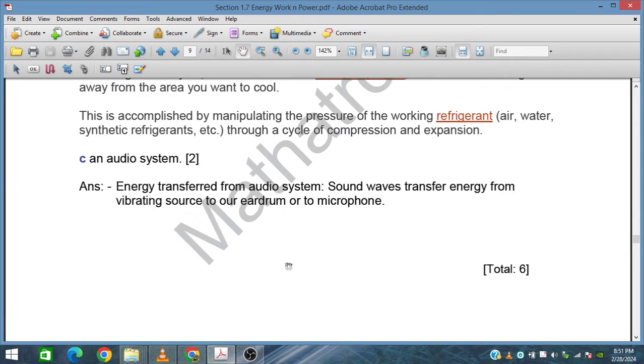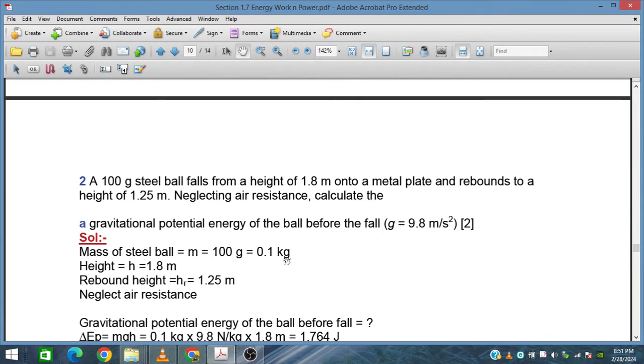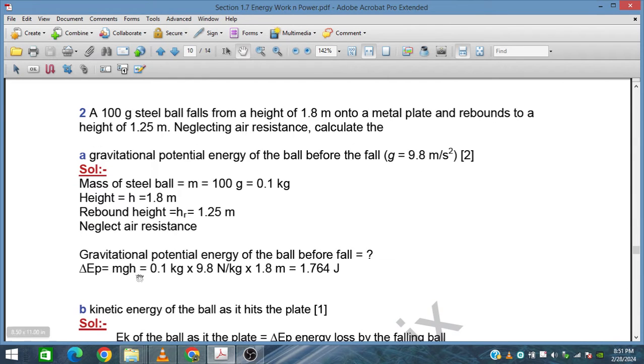Now we have a question: An 800 gram steel ball falls from a height of 1.8 meters onto a metal plate and rebounds to a height of 1.25 meters. Neglecting air resistance, calculate the gravitational potential energy of the ball before the fall. The mass is given, height is given, and rebound height is given. The gravitational potential energy of the ball before the fall is ΔEp = mgh = 0.1 kg × 9.8 N/kg × 1.8 m = 1.764 J.